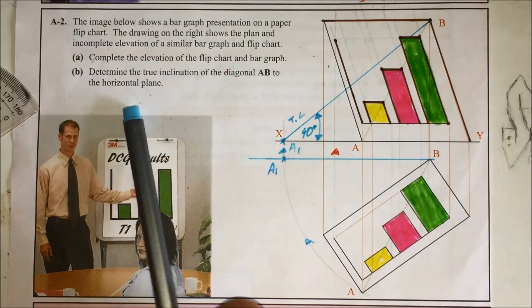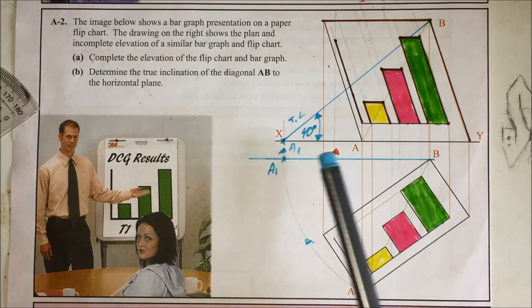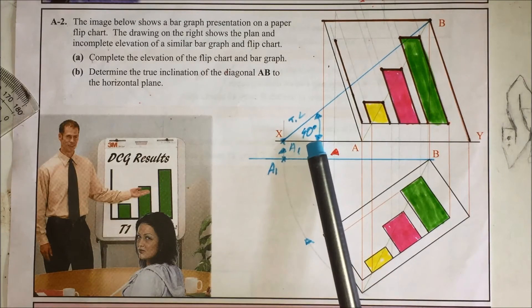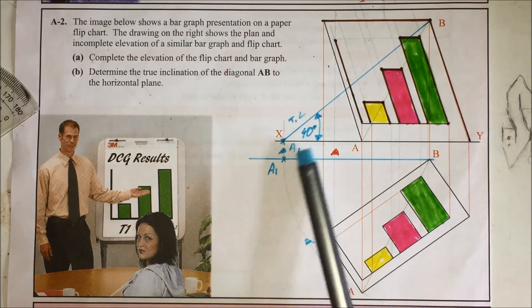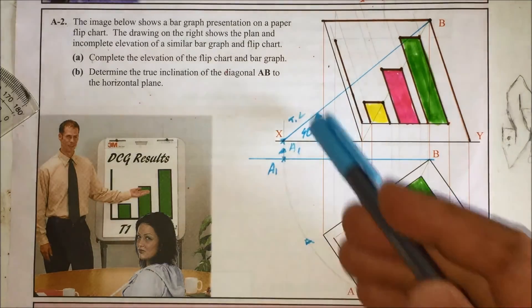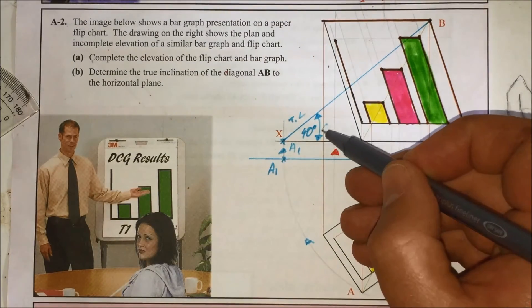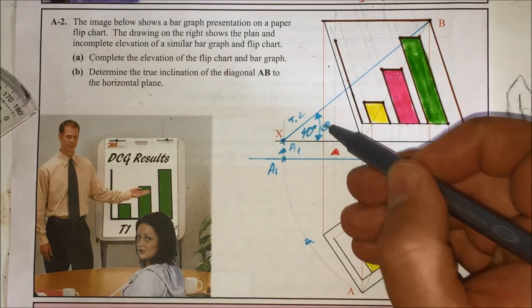So it says determine the true inclination of the diagonal AB to the horizontal plane. It doesn't say indicate, so I don't think it'll be given marks for putting in the angle. All you'll do is just determine it like this and you could mark in your behavioral angle sign that you do for the corner geometry. But that has given you a true inclination to the horizontal plane.